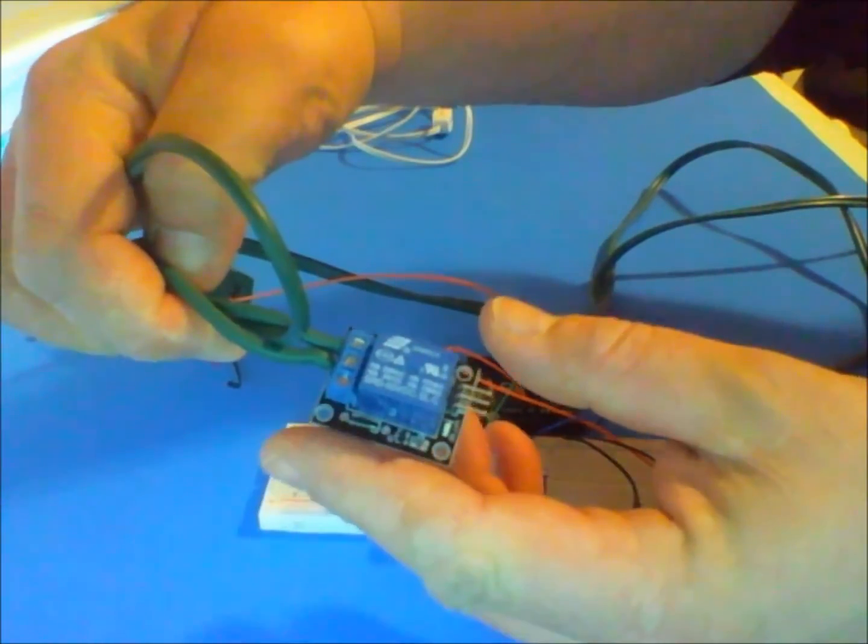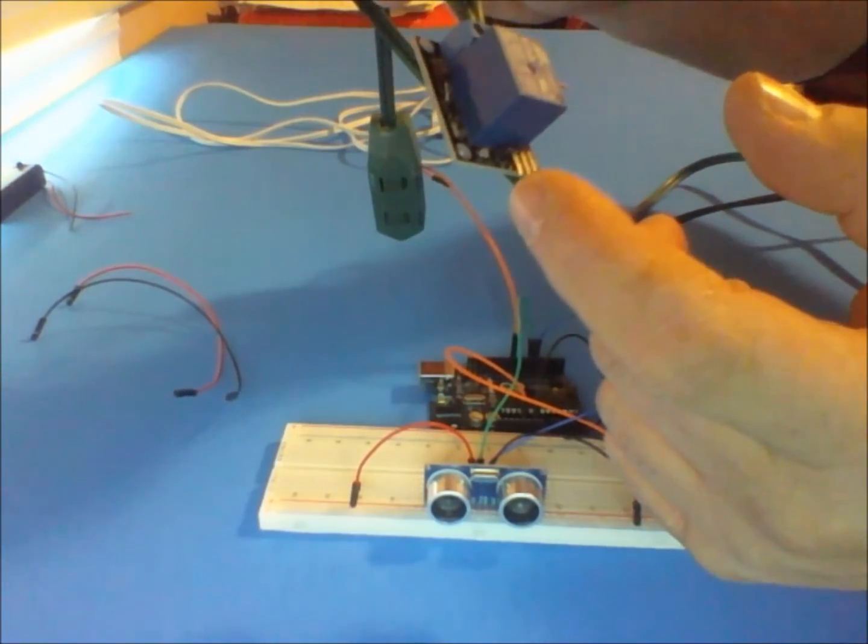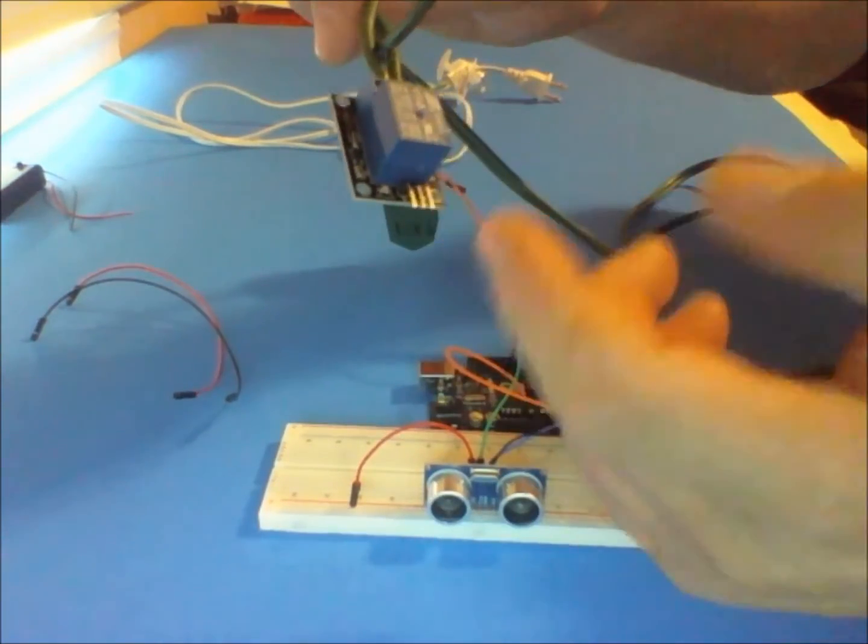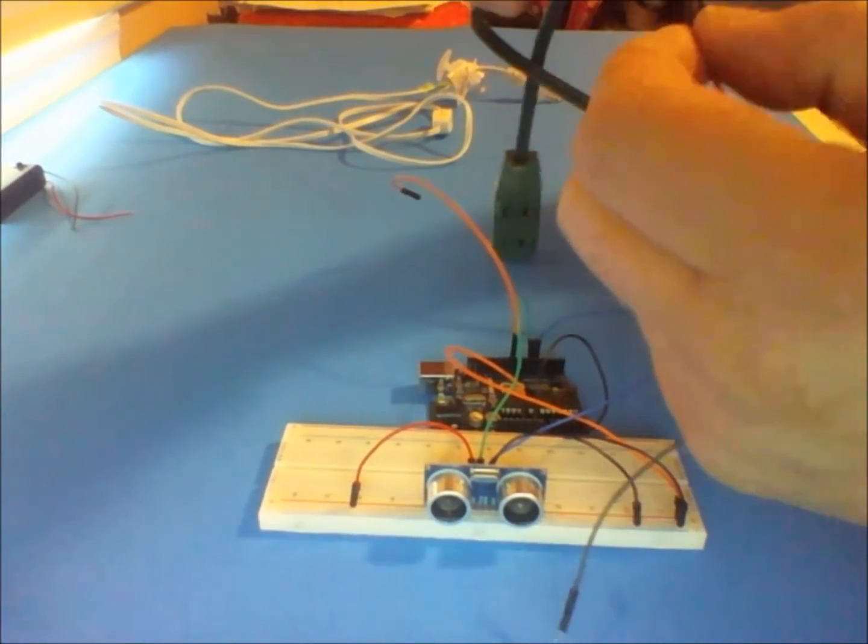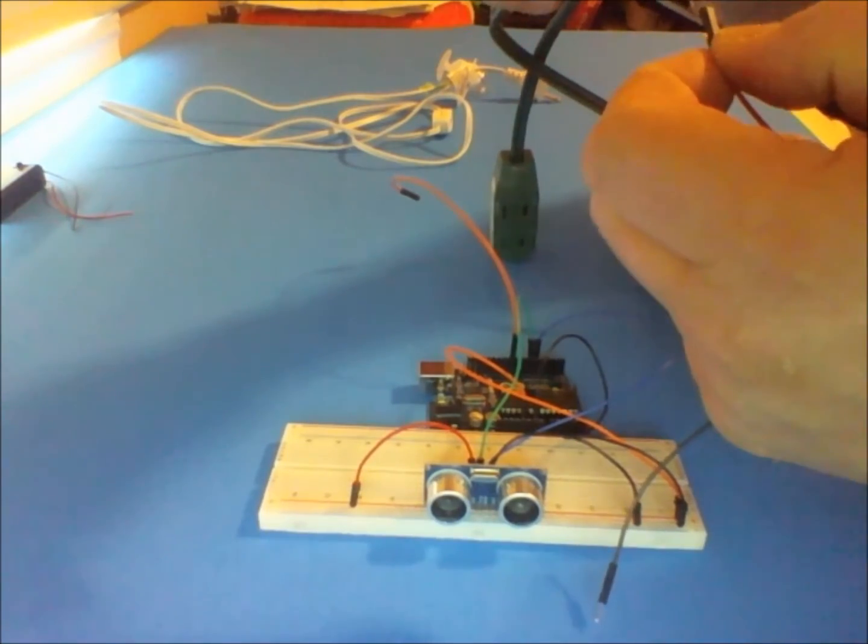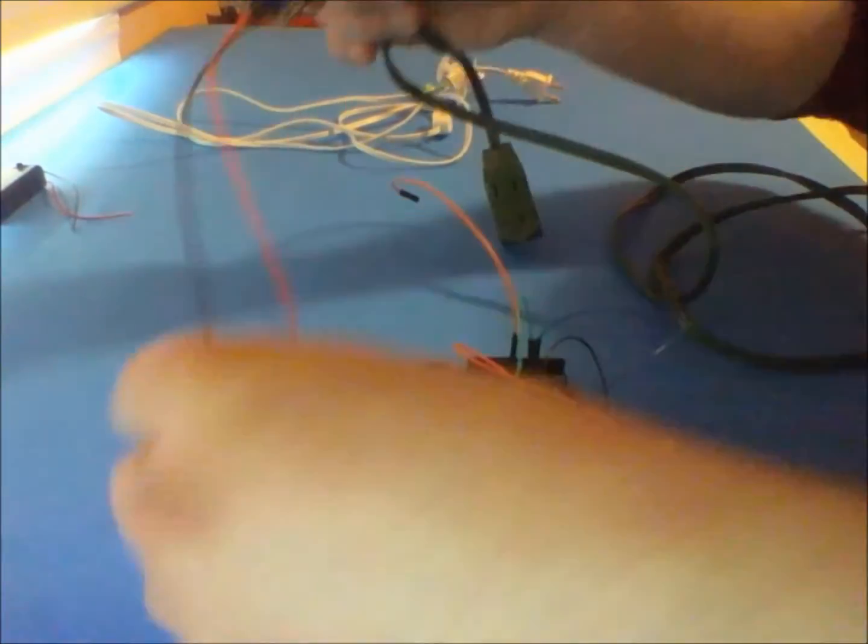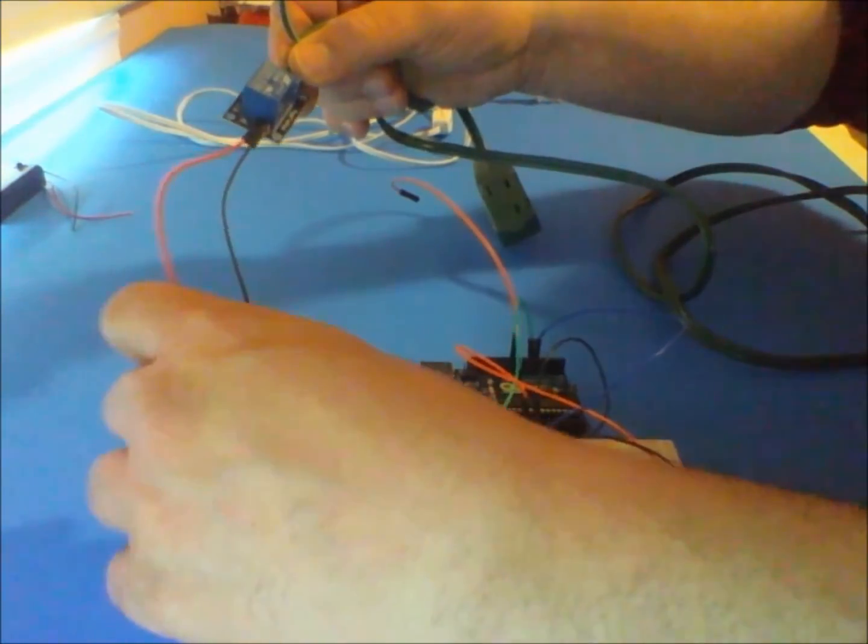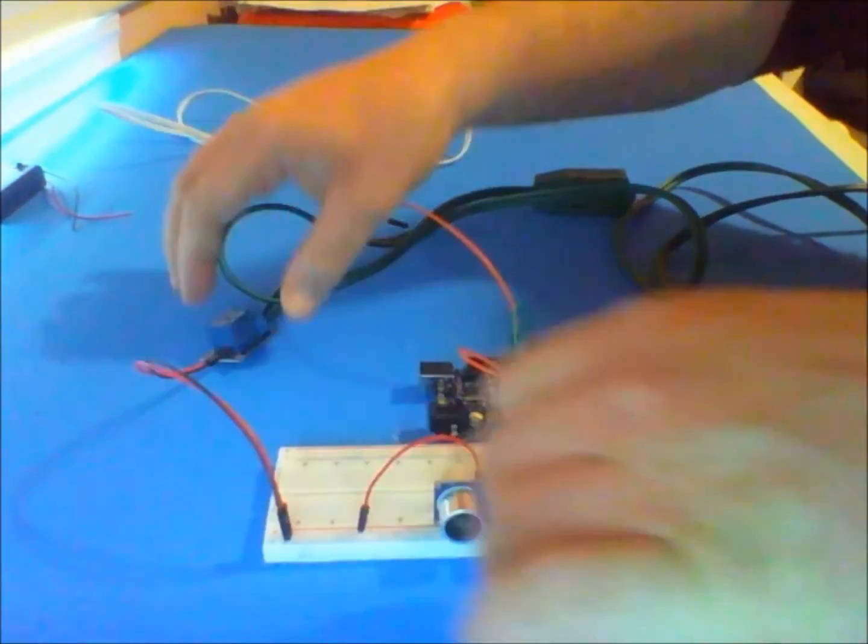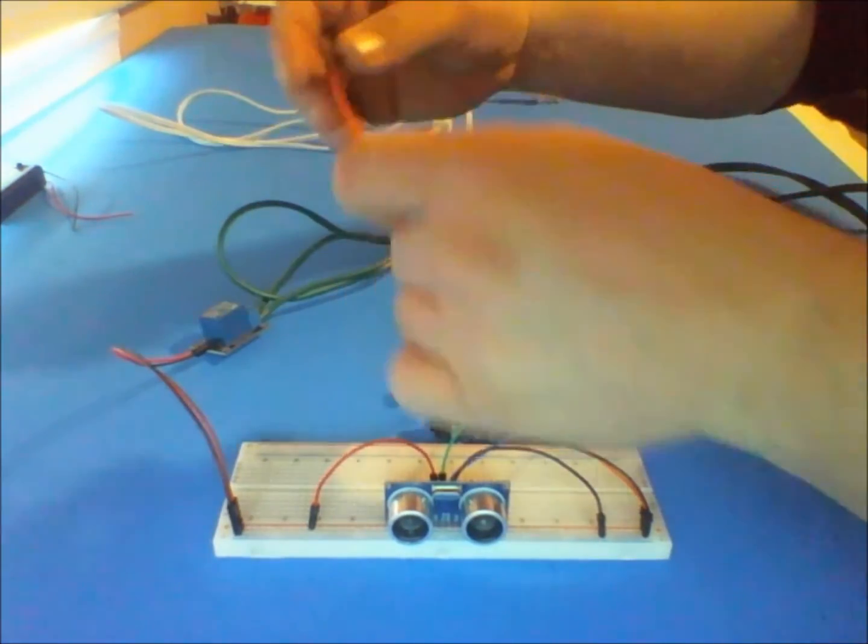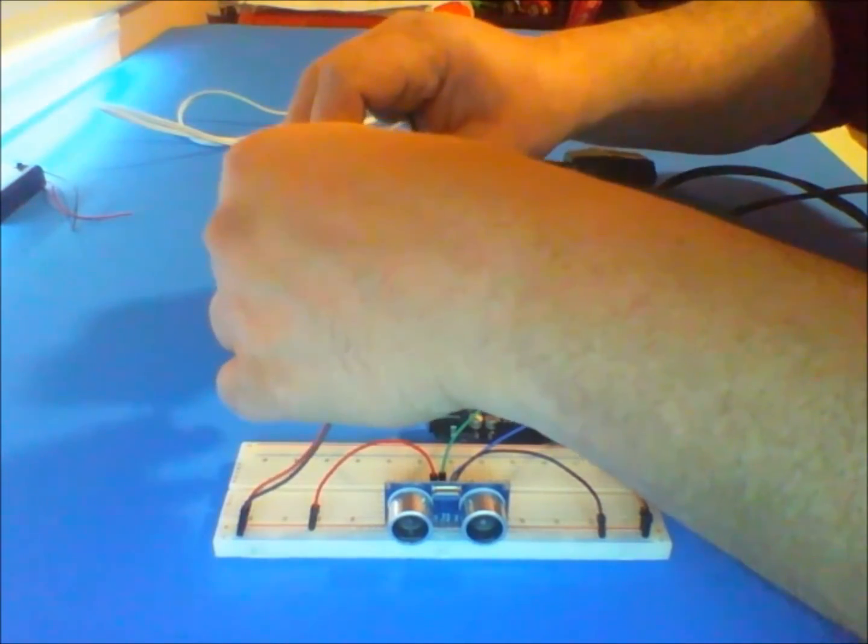This relay has three pins on this end: the negative, the positive, and the signal. Negative and positive are straightforward—you put them to the ground and the 5 volts. The positive is the red one, negative I'm using for black. Negative goes to ground and the positive is connected at 5 volts. Pin number 9 on the Arduino is going to control the relay whether to turn it on or off.